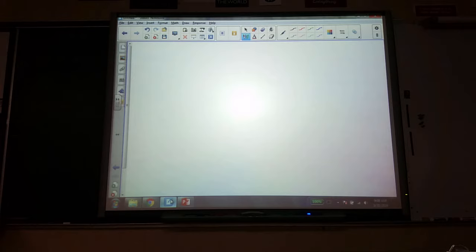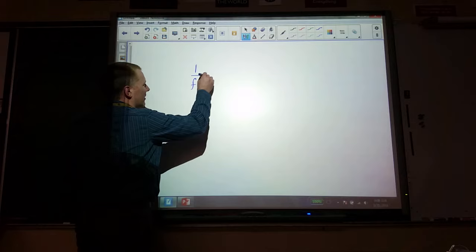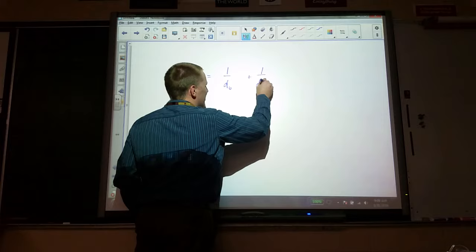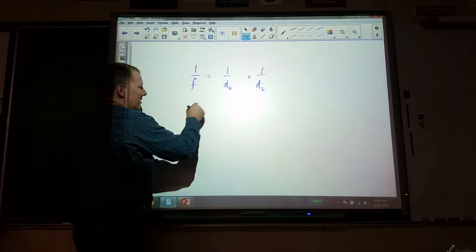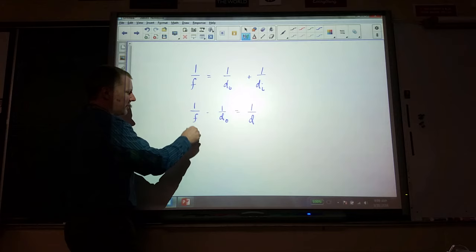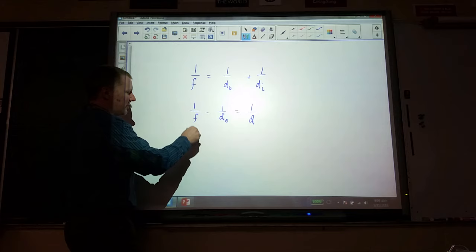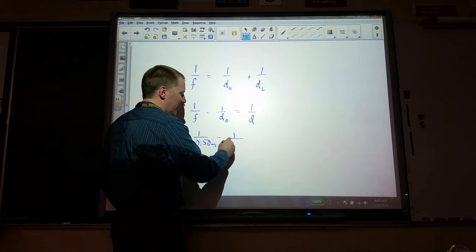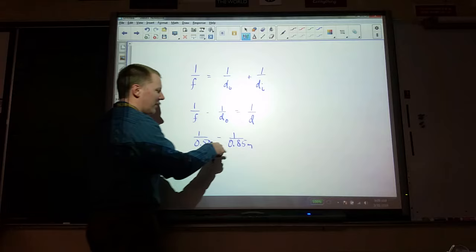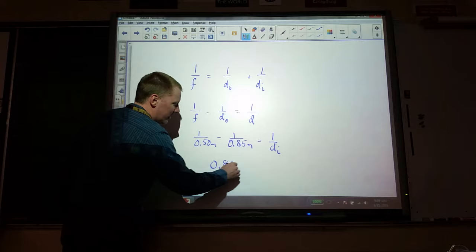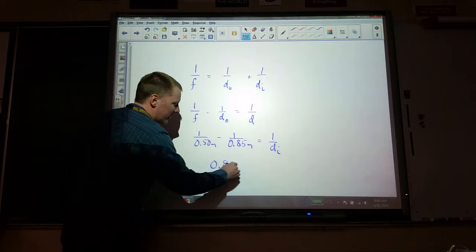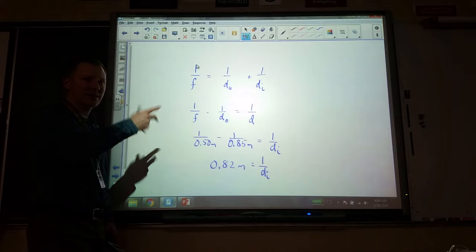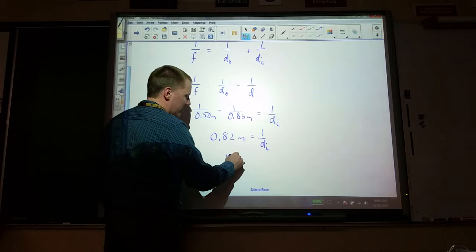So, the thin lens equation, remember, tells us that 1 over F is equal to 1 over DO object distance plus 1 over DI image distance. F is our focal length. We want to find the image distance. So, I'd subtract the 1 over DO from both sides. You get 1 over F minus 1 over DO equals 1 over DI. I then put these in my calculator at this point. So, you can either do 1 over the focal length of 0.5 meters minus 1 over the object distance, 0.85 meters. And that's 1 over image distance. And you got that like 0.82. So, this works out to about 0.82 meters when you dissolve it. But that's 1 over the image distance. So, we have to invert that. So, hit your x to the negative 1 and we have 1.21 meters for our image distance.